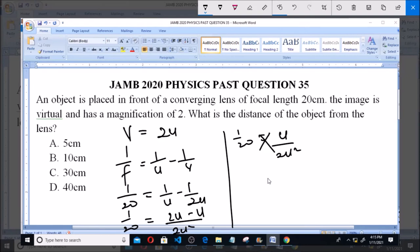So divide both sides by 2u. This gives us 10 equals u, so u equals 10 cm.